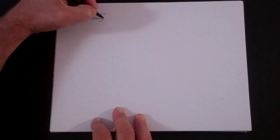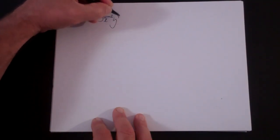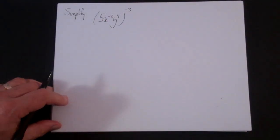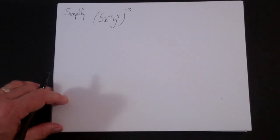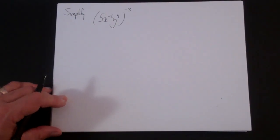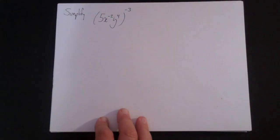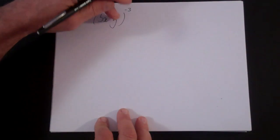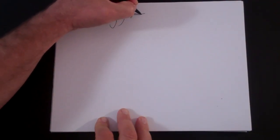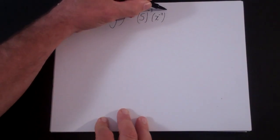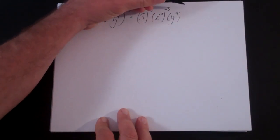Here's example number one: simplify 5x to the minus 2, y to the fourth, raised to the power of minus 3. To start, you can more or less ignore the negative exponents and just treat them using the simple rules. When you raise something in parentheses to a power, you raise everything to that power: 5 to the negative 3, x to the minus 2 raised to the minus 3, and y to the fourth to the minus 3.